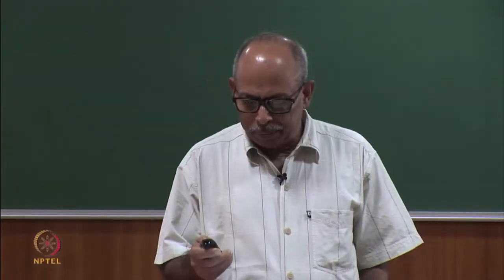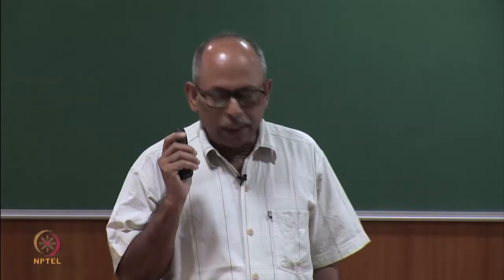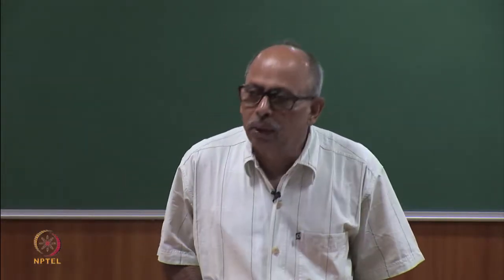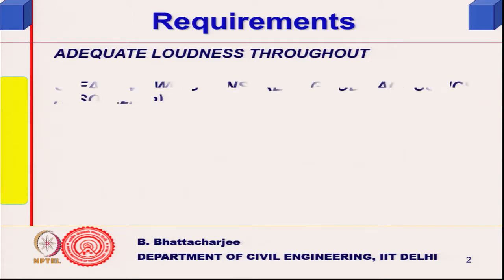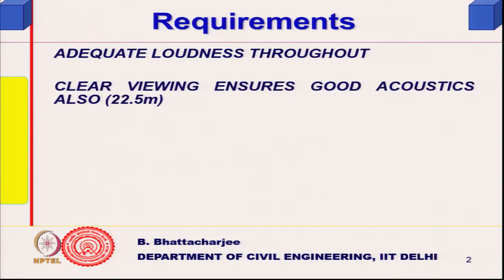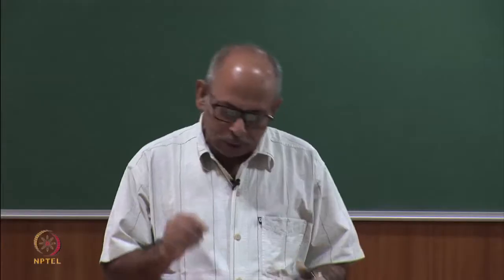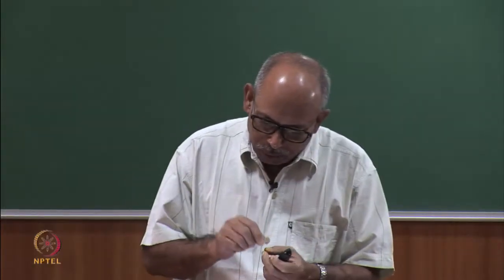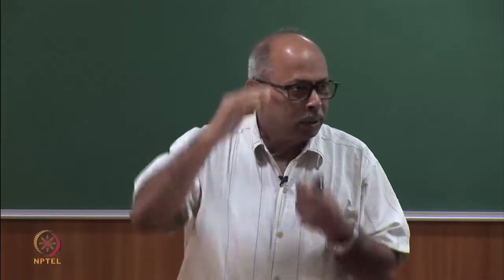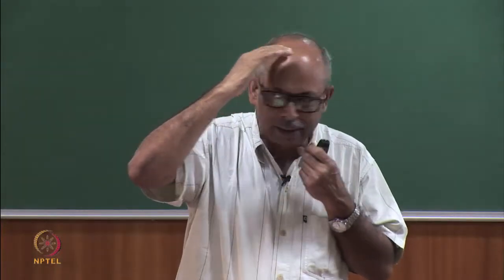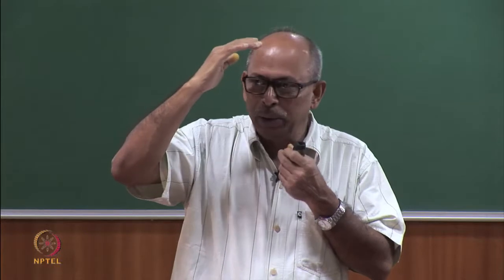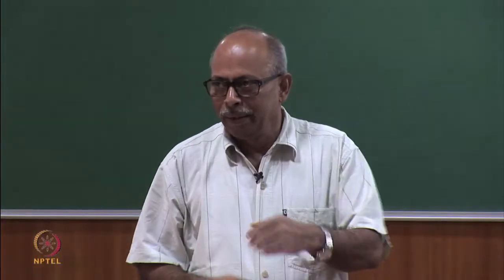We will look into auditorium design. We need adequate loudness throughout and clear viewing, because good viewing means good listening. If it is dramatics, then facial expressions are important. 22.5 meters is the distance at which people can visualize facial expressions — this relates to visual equity — and that is for small letters or details as well.